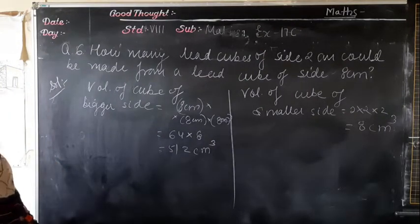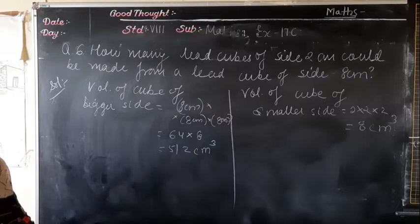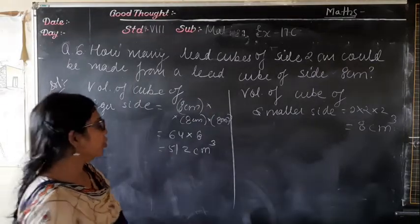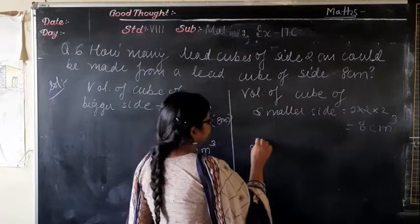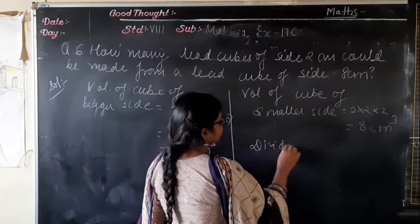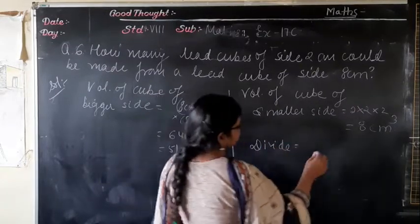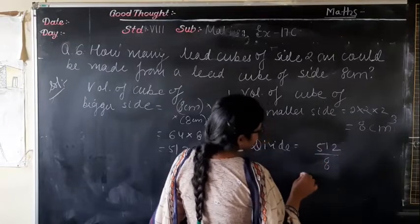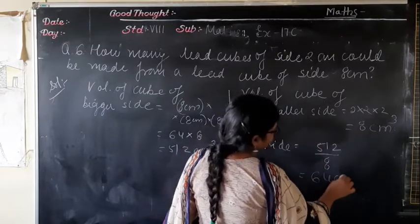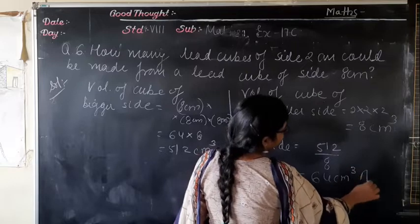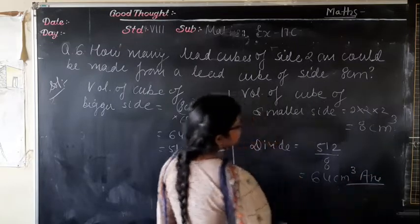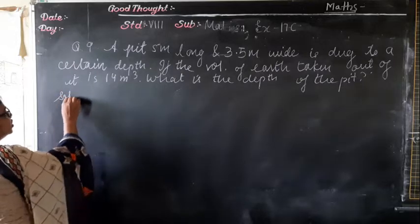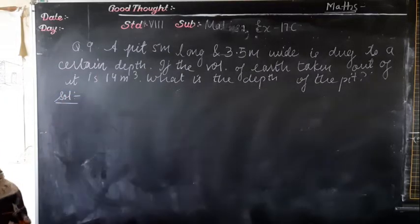How many lead cubes of side 2 cm could be made? Divide: 512 ÷ 8 = 64 cm³. So the answer is 64 such lead cubes.